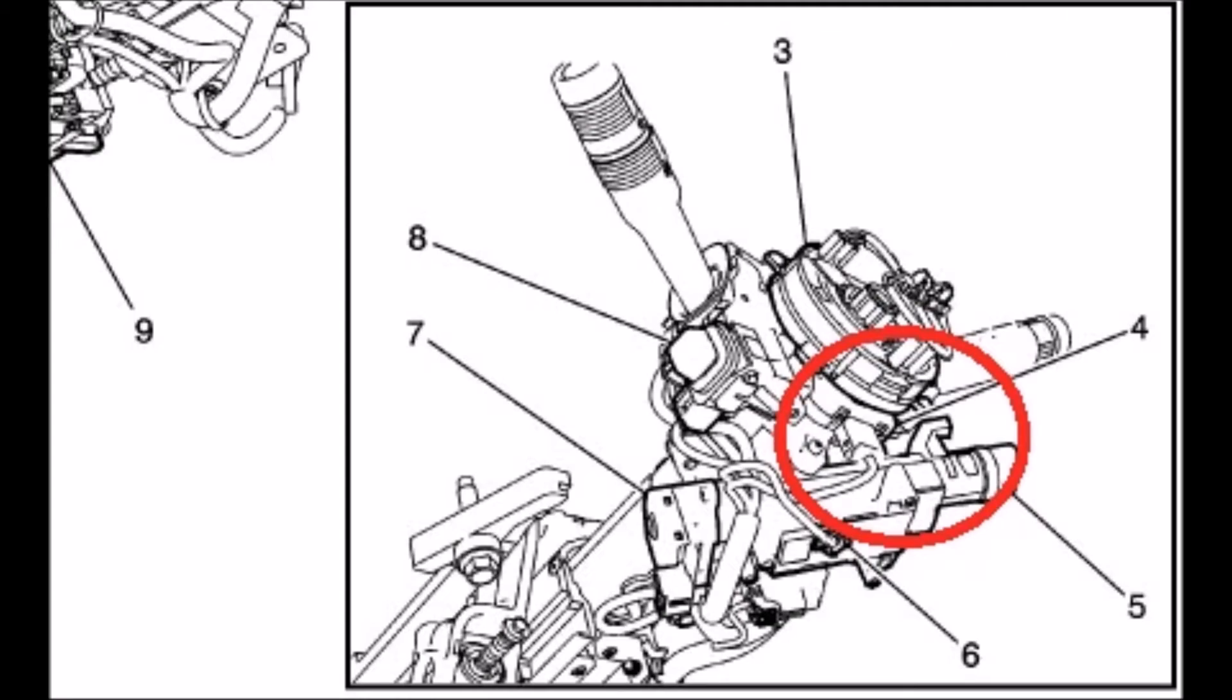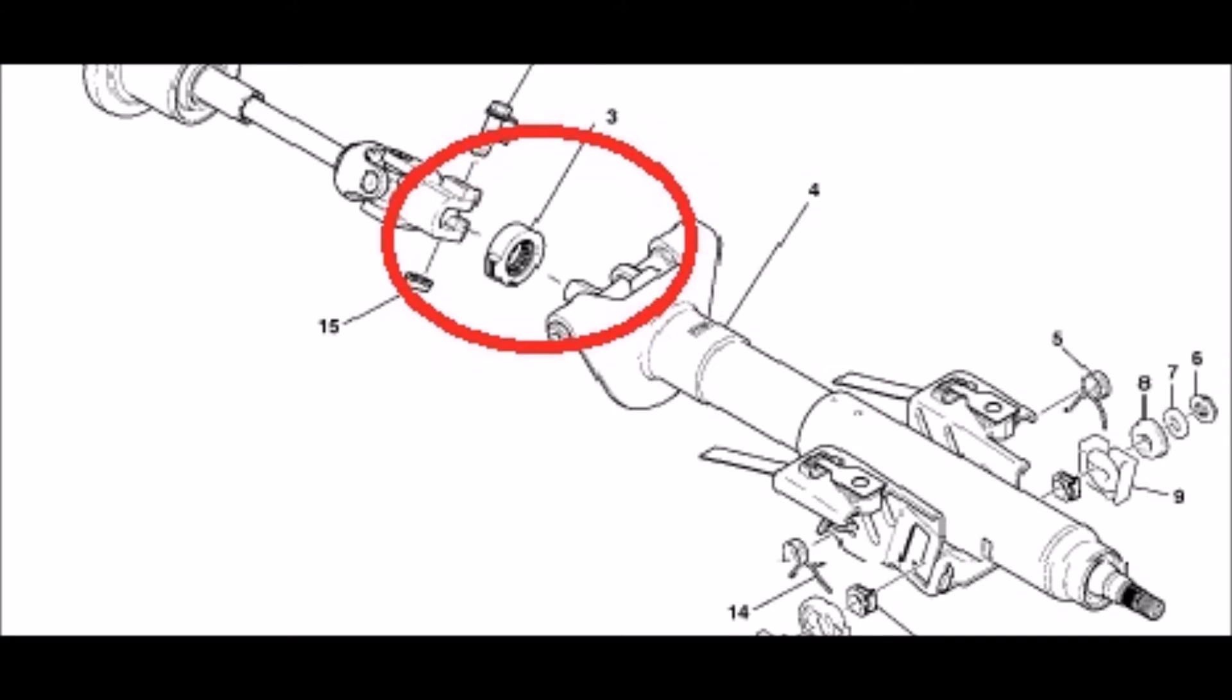The steering wheel angle sensor is usually found on the steering column. It may be placed behind the steering wheel or at the end of the column near the firewall.